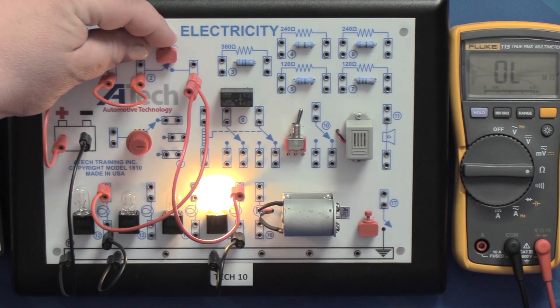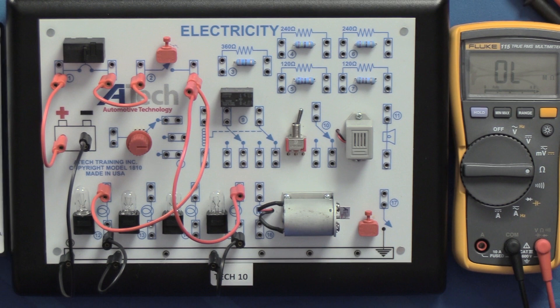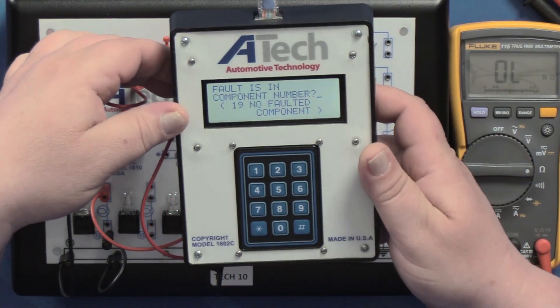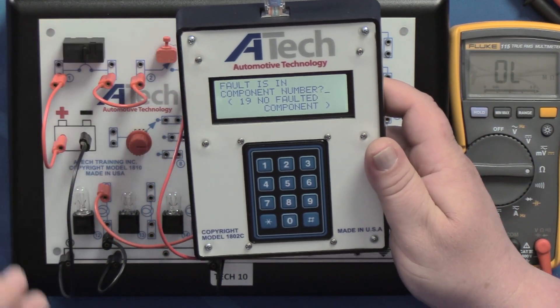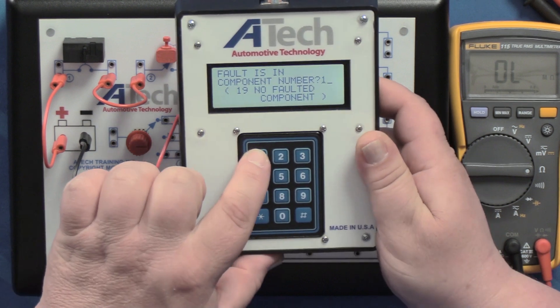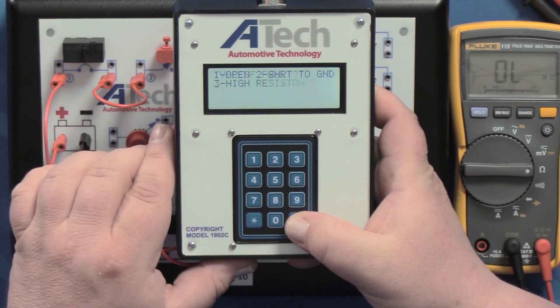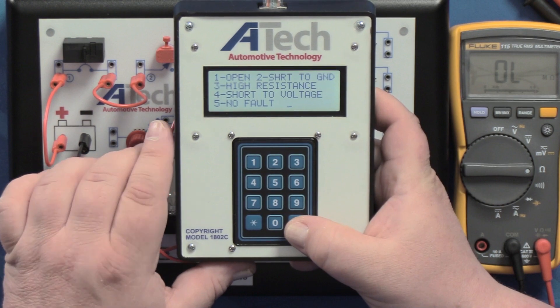So let me plug this back in real quick, we'll check one more time to make sure. Yep, that's still not working there. All right, so now we're going to put our answer into our keypad here. It's going to say fault is in what component. Looks like we're in component 12. I'm going to press the pound key and then what type of fault. I found high resistance there in component 12. I'm going to press 3 in there.